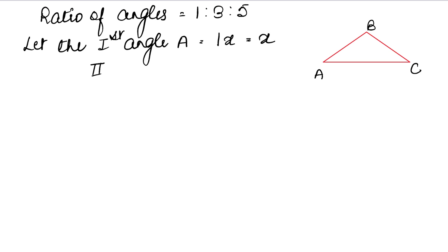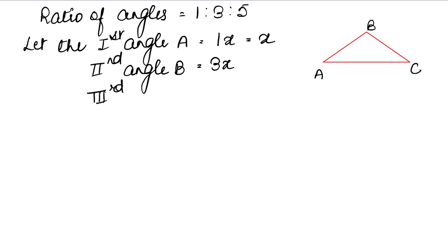The first angle is angle A. The second angle is angle B. The second ratio value is 3, so angle B equals 3x. The third angle is angle C, and the third ratio value is 5, so angle C equals 5x. Now we have all three angles in terms of the variable x.